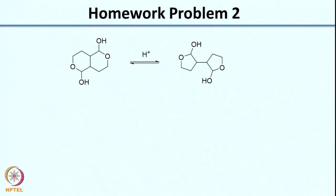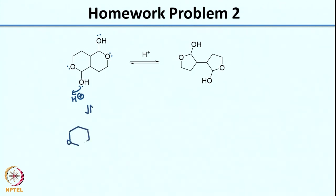Similarly, let us look at the next problem. In this problem again you have 2 hemiacetals, but here your medium is acidic — you have H+ in the medium. Let us look at all the sources that you have. The first thing would be protonation since you are doing this reaction in an acidic medium. Here I am protonating this OH, and I can imagine a similar protonation happening on the other side.